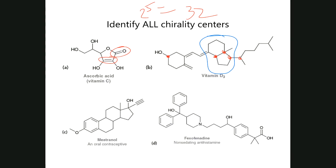Why isn't the last carbon a chirality center? If you look at this last carbon over here, there are two methyl groups — these two groups are the same. And if they're the same, it doesn't have to be hydrogen; as long as it has two of the same, it automatically renders that carbon not a chirality center.